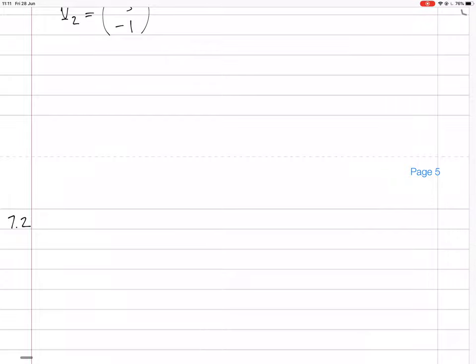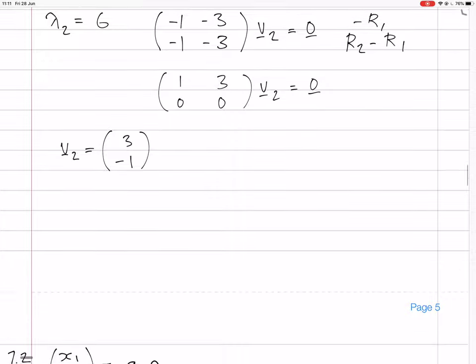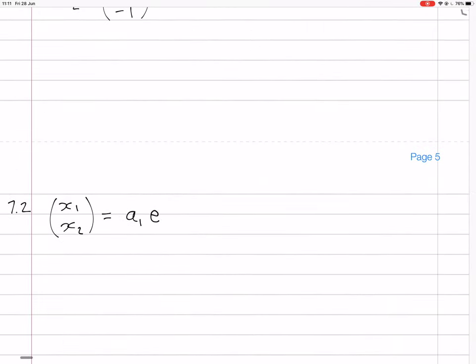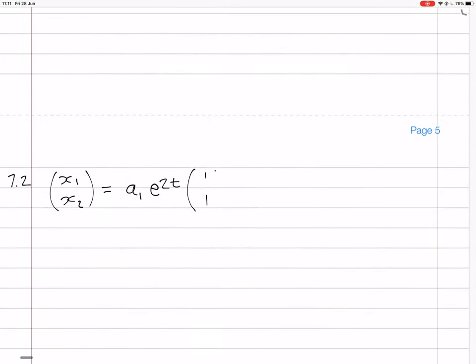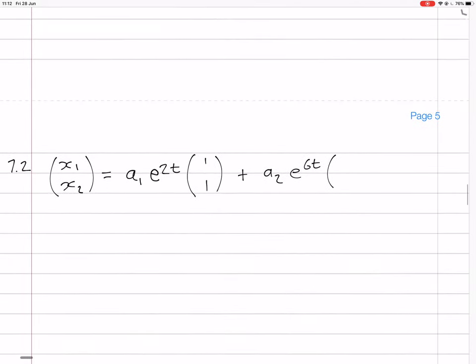We have x1, x2 will equal, there's gonna be scalars as well, of course. So a1 times e to the, now lambda 1 was 2, so to the 2t, and the eigenvector was 1, 1. And then a2 e to the 6t, the eigenvector was 3 minus 1. That's the solution. Let's check it.